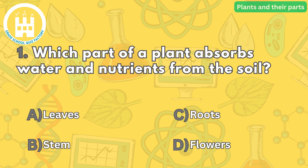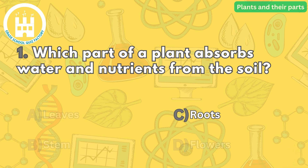Question number one: which part of a plant absorbs water and nutrients from the soil? The correct answer is letter C. Roots are the part of a plant that anchor in the soil and absorb water and nutrients that the plant needs to grow.